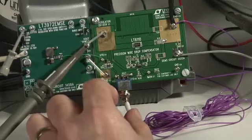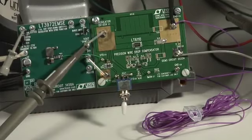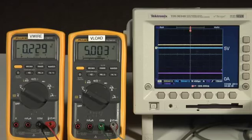Now, the output of the LT6110 is switched in and the voltage at the load goes to 5 volts. Note that the drop in the wire is identical but the regulator output increases to compensate.